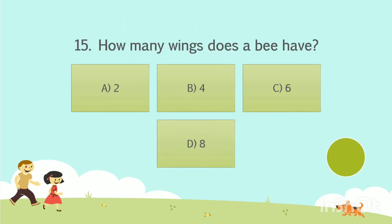Question No. 15. How many wings does a bee have? Option A: 2. Option B: 4. Option C: 6. Option D: 8. Your time starts now. The answer is Option B: 4.